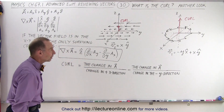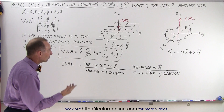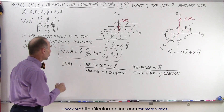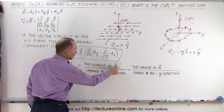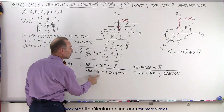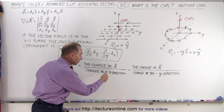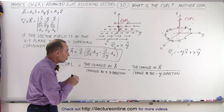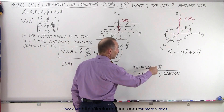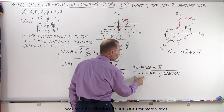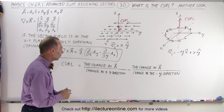We have the two vector fields from the previous video on the board, and we're going to see how the curl formula applies to them. The curl is equal to the change in the vector field divided by the change in the x direction — in other words, we make a change in the positive y direction and see how much the vector field changes, then subtract the change in the vector field when we make a change in the negative y direction.